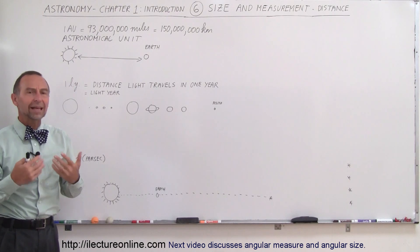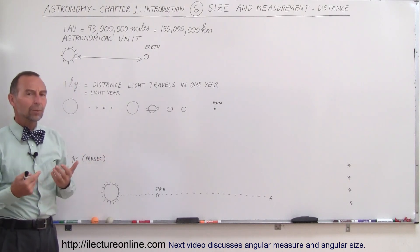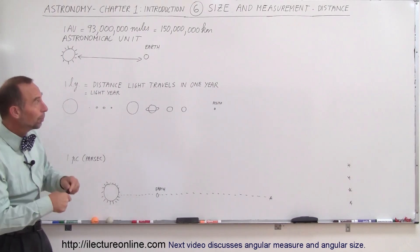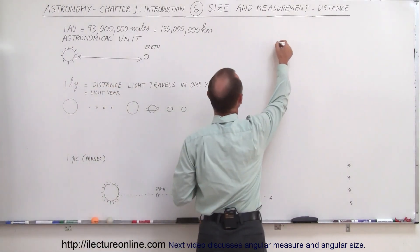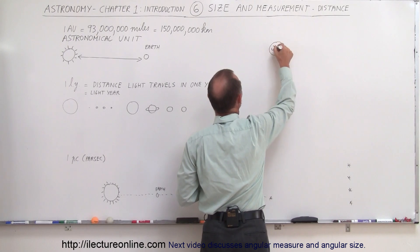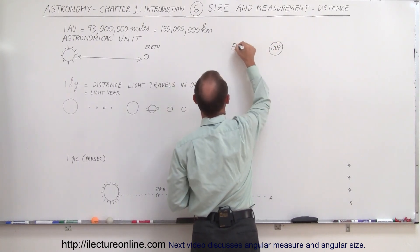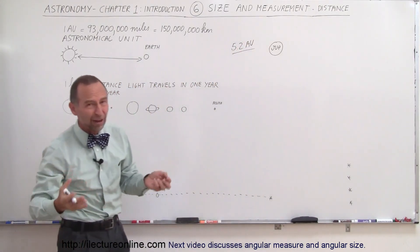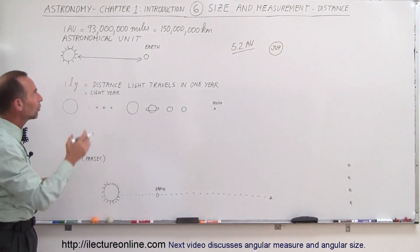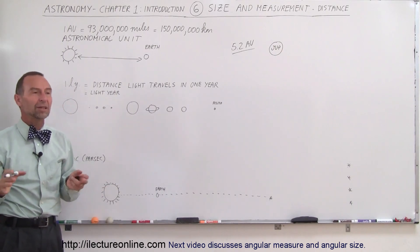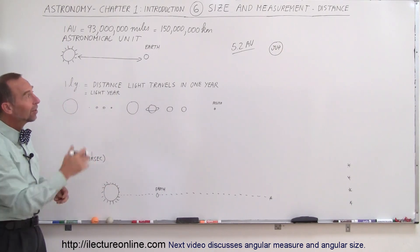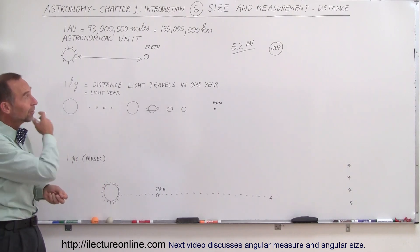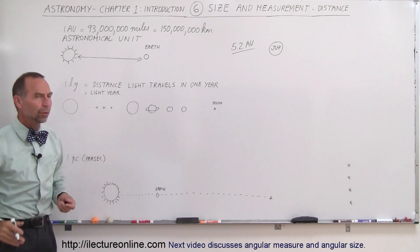So whenever we talk about things in our solar system, we tend to think of them in terms of astronomical units. For example, the distance from the Sun to Jupiter is about 5.2 astronomical units. So if this is Jupiter right here, the distance from there to there is about 5.2 astronomical units, which then automatically means it's about 5.2 times the distance between the Sun and the Earth. And if you round things off a little bit and say it's about 100 million miles, then 5.2 astronomical units is about 500 million miles.